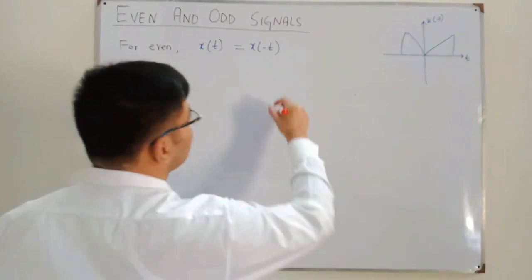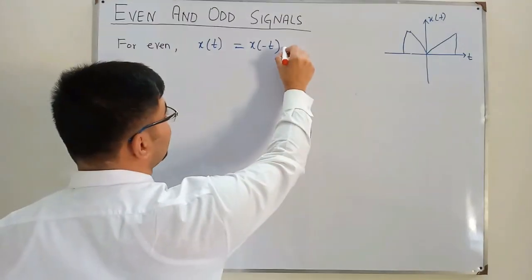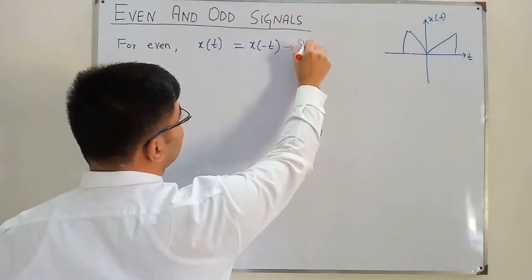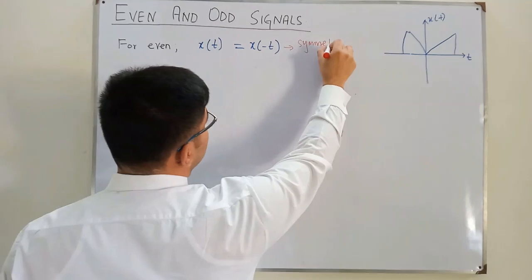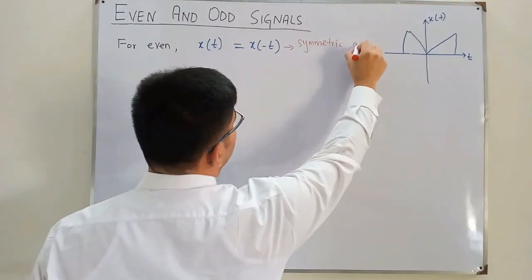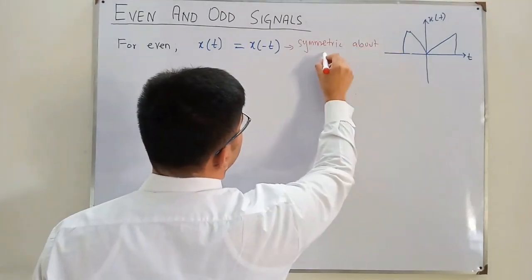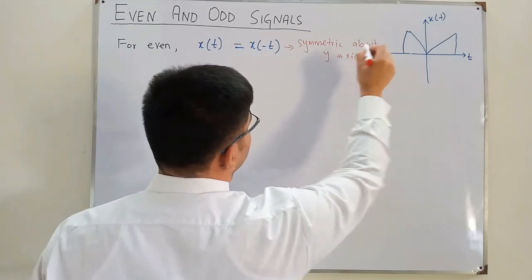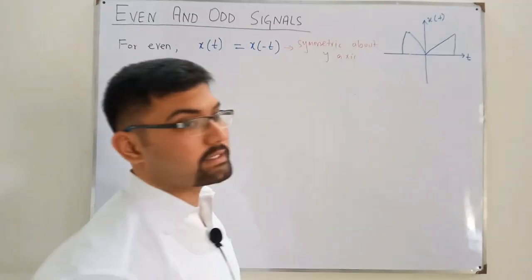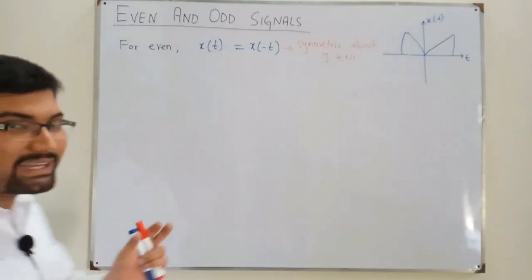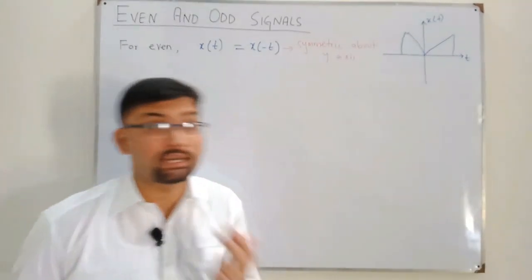We can conclude from this that an even signal is symmetric about the y-axis.